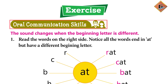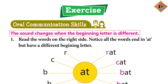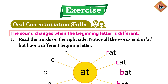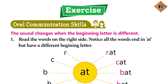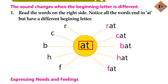Dear teachers, ab hum dekhenge oral communication skills ko. Jaisa ki aap ko nizar a raha hai page number 53 pe. Humare paas basically hum ne dekha — que the sound change when the beginning letter is different. Yarni ki agar humare paas koi aise alfaz a rahe hain, aise words a rahe hain, jinki ending sound same hai — jaisa ki rat, cat and bat. To ab hum dekhenge ki jaisa aap beginning letter, yani ki first letter ko change karte ho, to aap ki jay sound hai wo bhi differ kar jati hai. Jaisa ki aap ko screen pe nizar a raha hai, ek diagram hai — center mein 'at' likha hua hai.